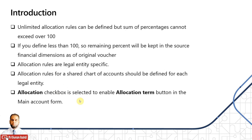Unlimited allocation rules can be defined, but the total percentage cannot exceed 100%. If you define less than 100%, the remaining percentage will be kept in the source financial dimension as per the original voucher and will not be distributed. Allocation rules are also legal entity specific. Rules for a shared chart of accounts must be defined for each legal entity. In the main account form in General Ledger, there is an allocation checkbox which must be selected to enable the allocation terms button.